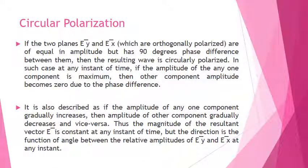Circular polarization. If the two planes EY and EX are equal in amplitude but have 90 degree phase difference, in linear polarization there is no phase difference, but here if you have 90 degree phase difference, then the resulting wave is circularly polarized.